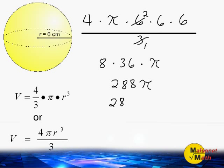But if we want to go a little further and solve using 3.14 for pi, we will have to multiply 288 by 3.14. Now, we know 288 is close to 300, and 3.14 is close to 3, so as an estimate, we could do 3 times 300, which is 900. Our answer should be somewhere in the neighborhood of 900 cubic centimeters.